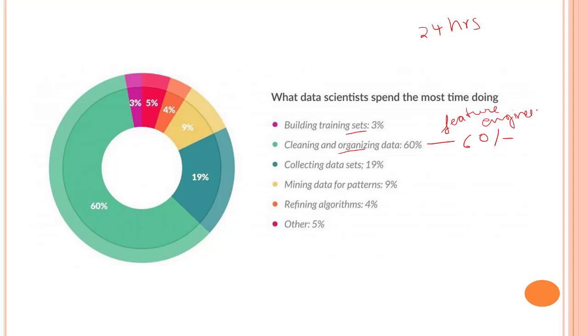That is feature engineering. Creating the dataset, creating the clean dataset takes a lot of time. Collecting the dataset is quite easy and takes about 20 percent. Mining data for patterns - that is feature selection - all of these are part of your feature engineering.